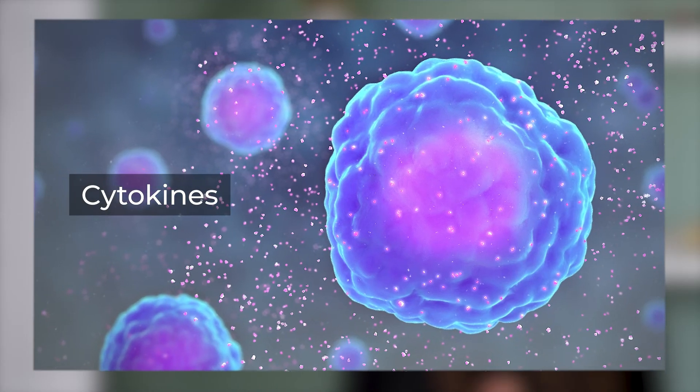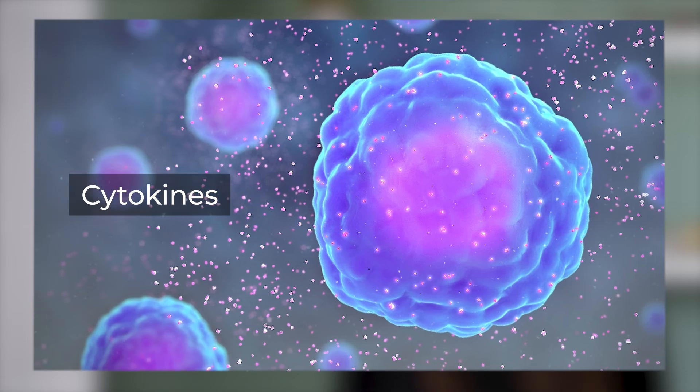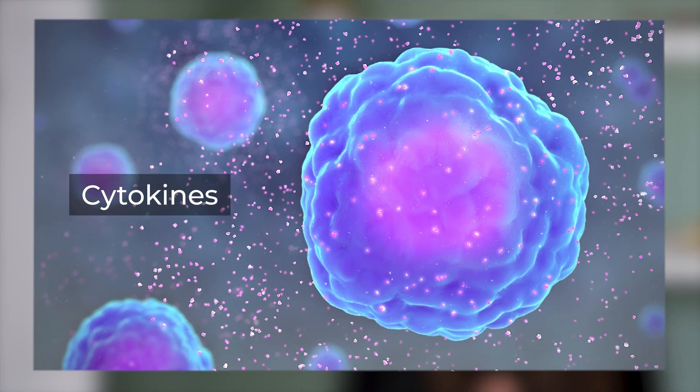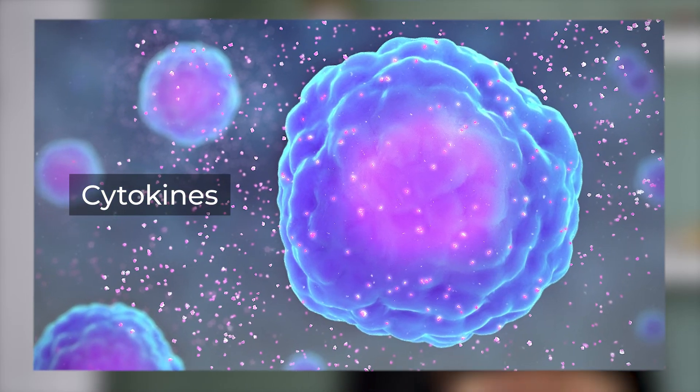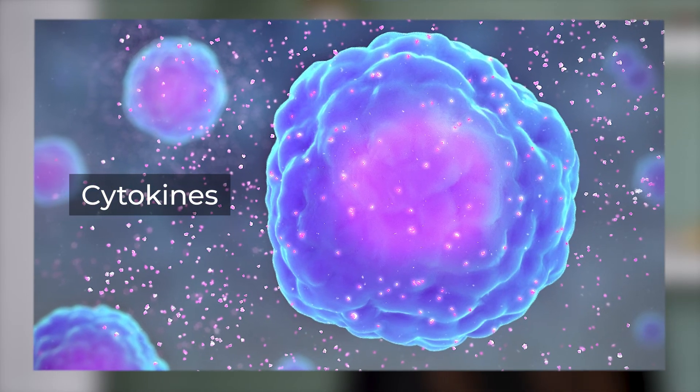When you exercise and expose your muscles to additional stress, it causes something called microscopic damage. This is the only damage that is good for your muscles, as it will release something called cytokines. Cytokines will then wake up your brain to come and repair these micro traumas. This cycle of tear and repair is what will allow your muscles to grow.